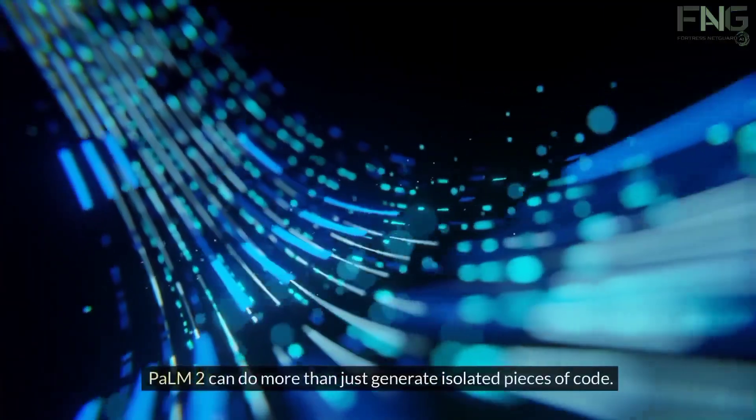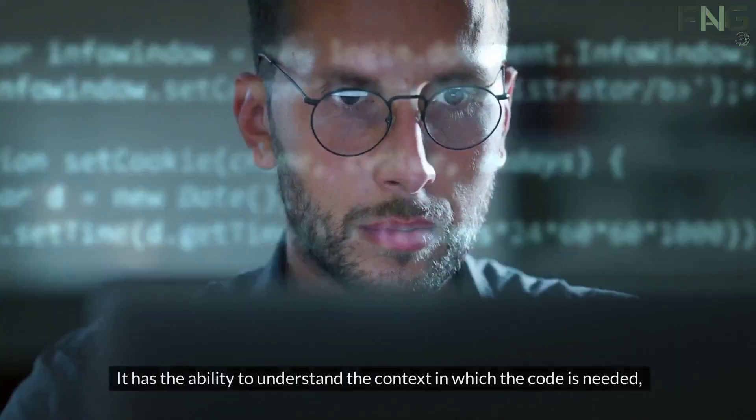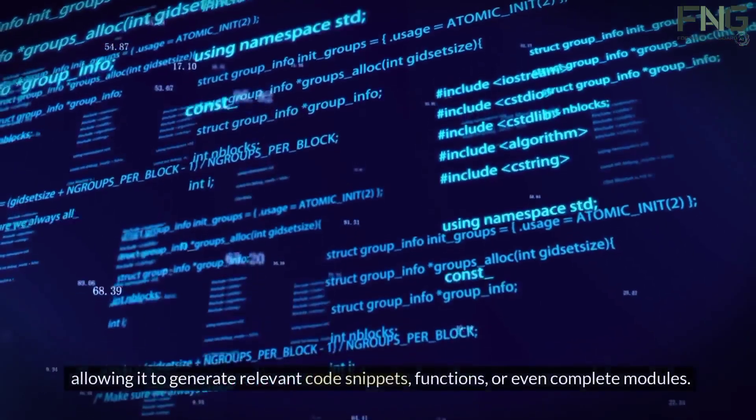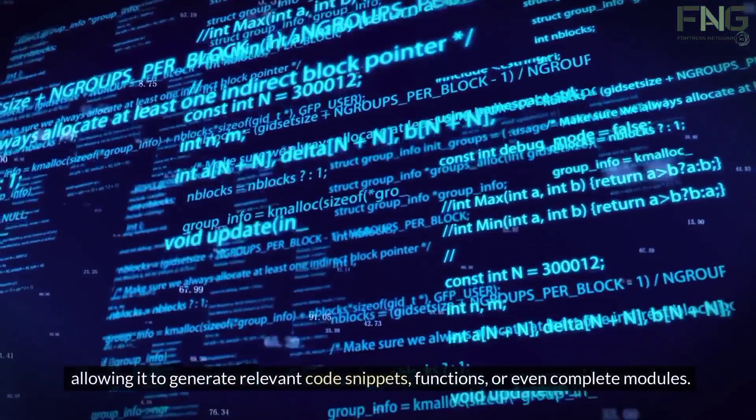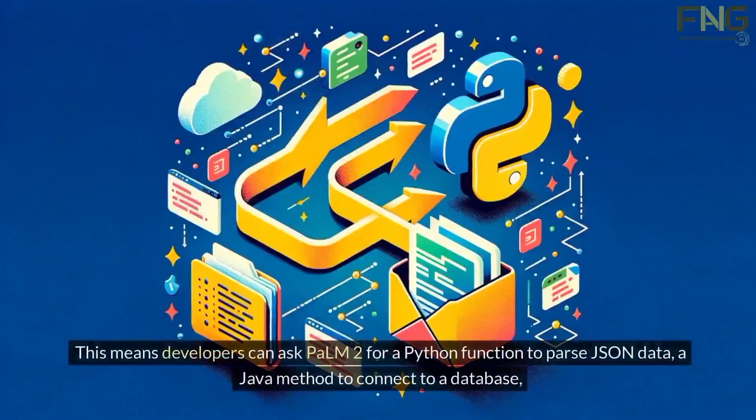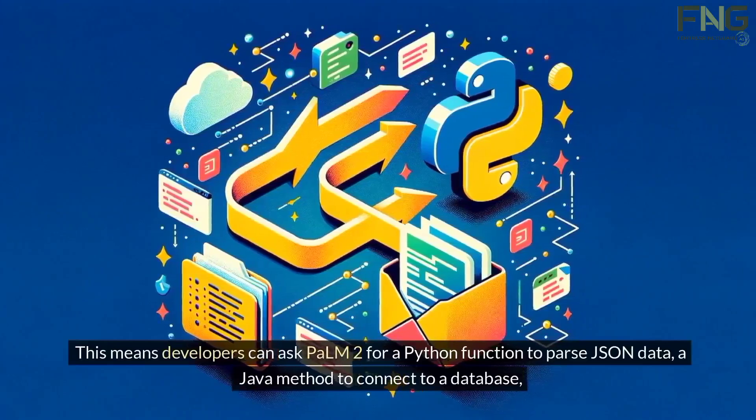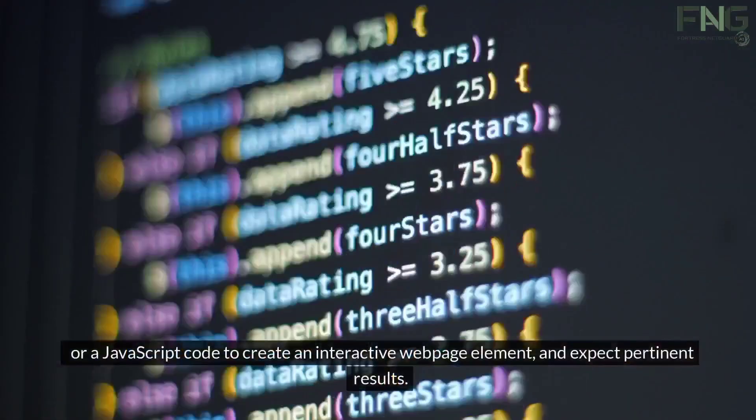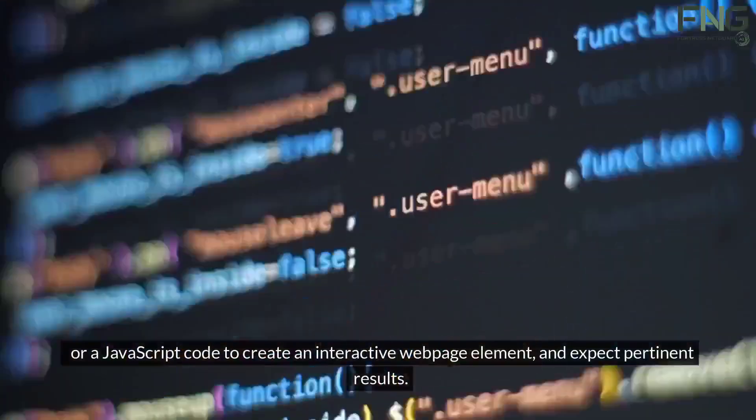Palm 2 can do more than just generate isolated pieces of code. It has the ability to understand the context in which the code is needed, allowing it to generate relevant code snippets, functions, or even complete modules. This means developers can ask Palm 2 for a Python function to parse JSON data, a Java method to connect to a database, or a JavaScript code to create an interactive web page element and expect pertinent results.